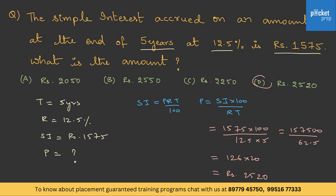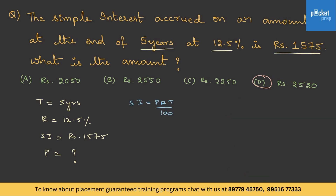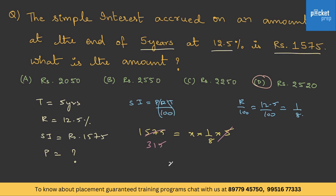Doing the division gives rupees 2520, so the answer is option D. For a shortcut to avoid decimals: note that R/100 = 12.5/100 = 1/8. Substituting: 1575 = x × (1/8) × 5. The 5 cancels to give 315, so x = 315 × 8 = rupees 2520. This shortcut avoids working with the decimal denominator directly.